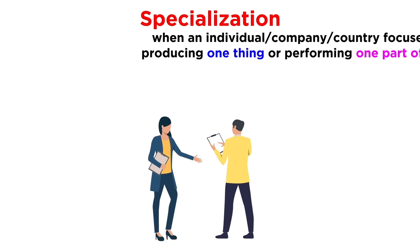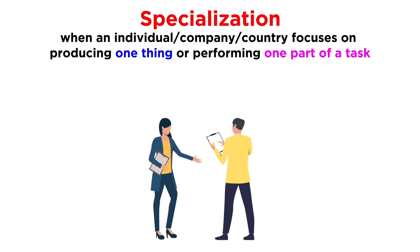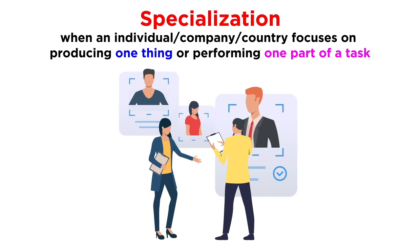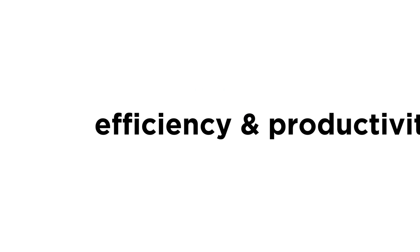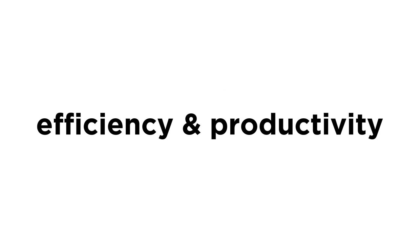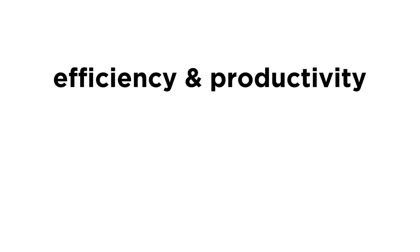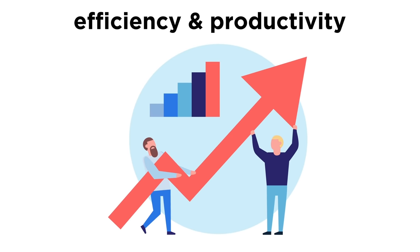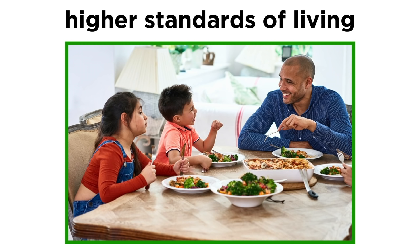In the previous tutorial, we learned about specialization, which is when an individual, company, or country specializes in producing one thing or one part of a task, and relies on others to produce everything else or complete the other parts of the task. We also learned about why specialization is so important — because it leads to more efficiency, higher productivity, and higher standards of living.